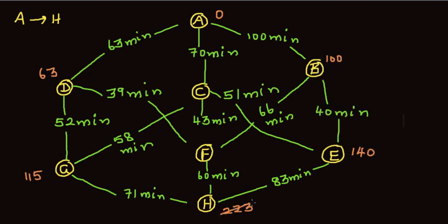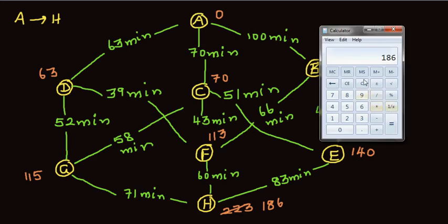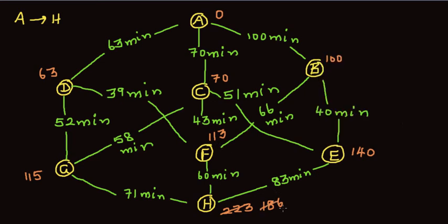We'll cross the previous best out. This is a trial and error method — you keep bettering the number until you reach the best. If you go A to B, B to E to H it is 223; via D it is 186, so that is better. What if we go straight: A to C is 70 minutes, then 70 plus 43 is 113, and 113 plus 60 is 173 — that's even better!